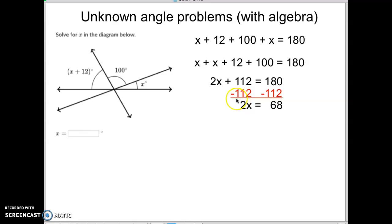Now, next step. x is being multiplied by 2. And what's the opposite of multiply by 2? You might say it's divide by 2. But remember, whatever we do on one side, we must do to the other. So we will divide by 2 on this side. We'll divide by 2 on this side. And we get x equals 34 left over. So that is how you do that one.